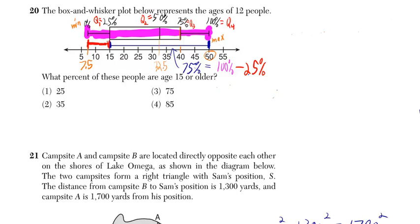We want to know what percent of these people are age 15 or older. Age 15 is actually our quartile 1 value, and that gives us 25% of all the data values up until there.